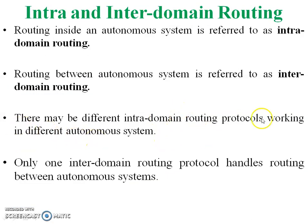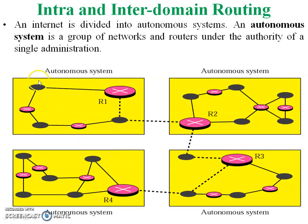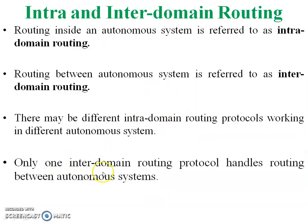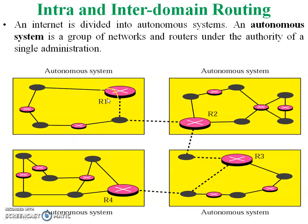There may be different intra domain routing protocols working in different autonomous systems. For example, RIP is working in the R1 autonomous system and OSPF is working in the R2 autonomous system. Only one inter domain routing protocol handles routing between autonomous systems. So if R1 and R2 — meaning RIP and OSPF — want to communicate with each other, they do so with the help of BGP.